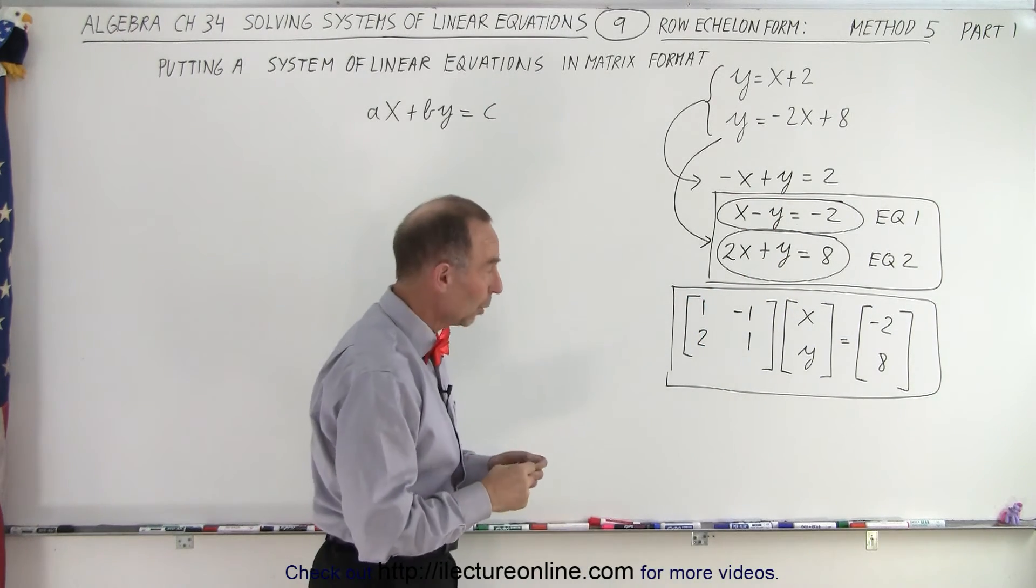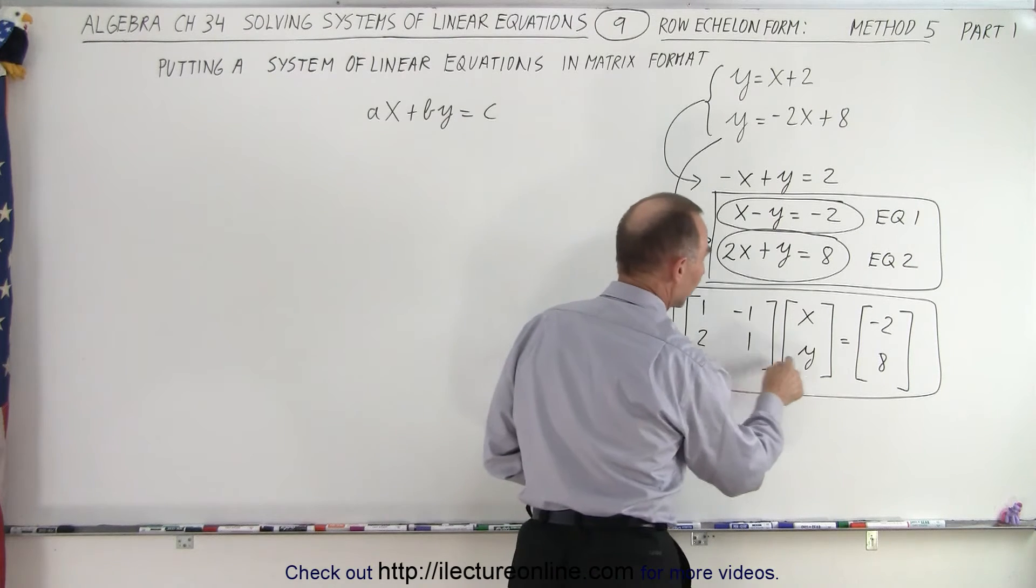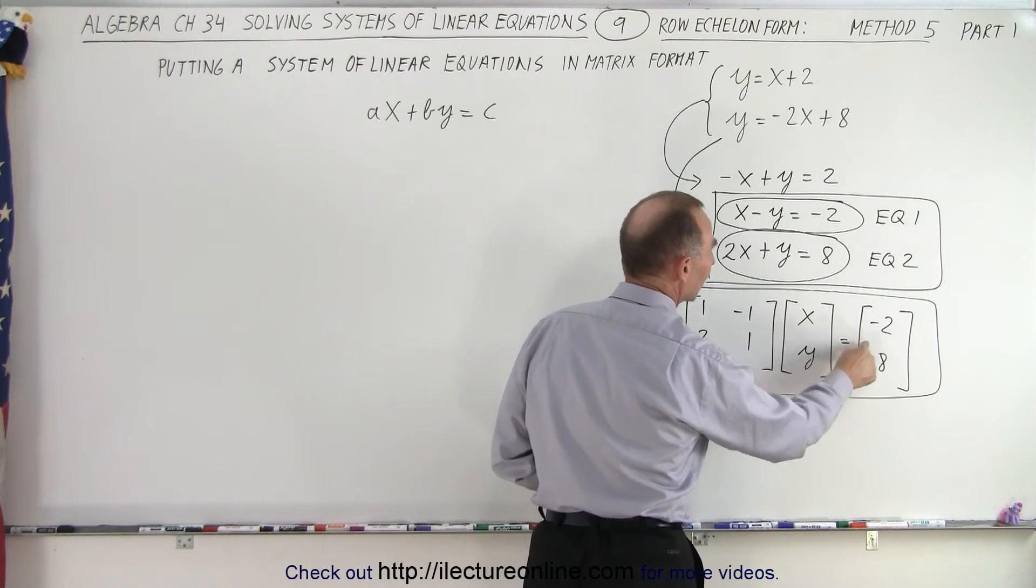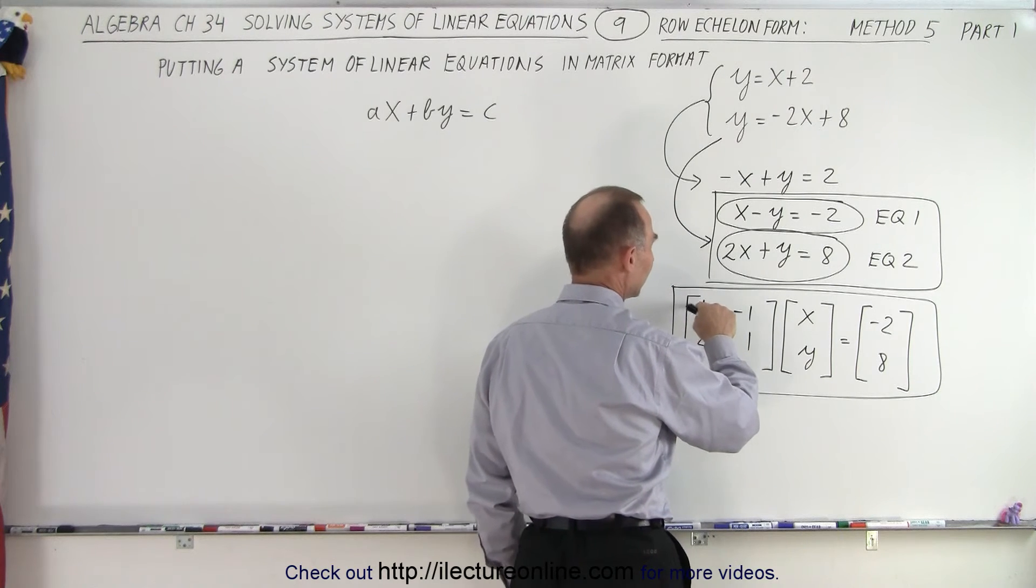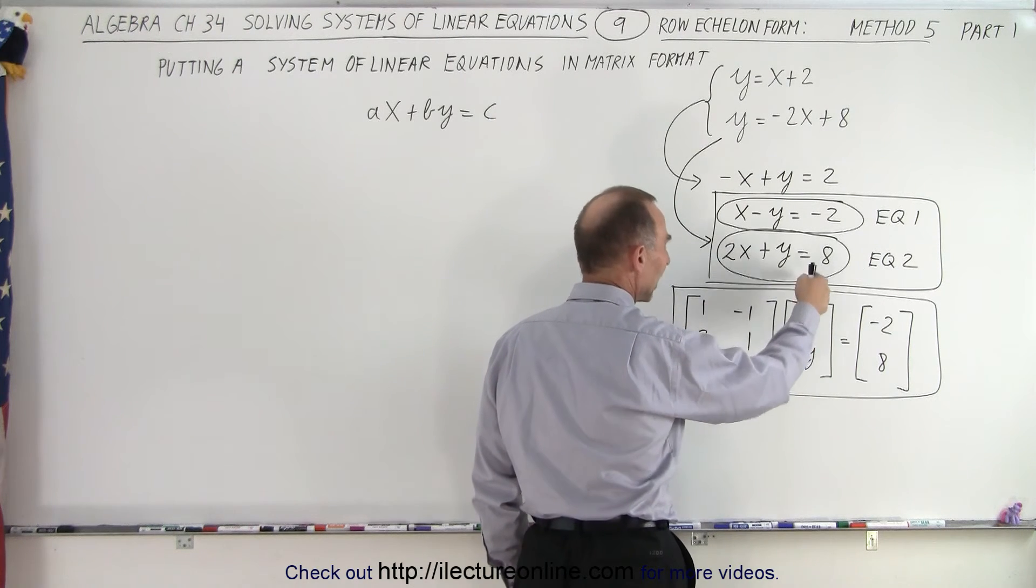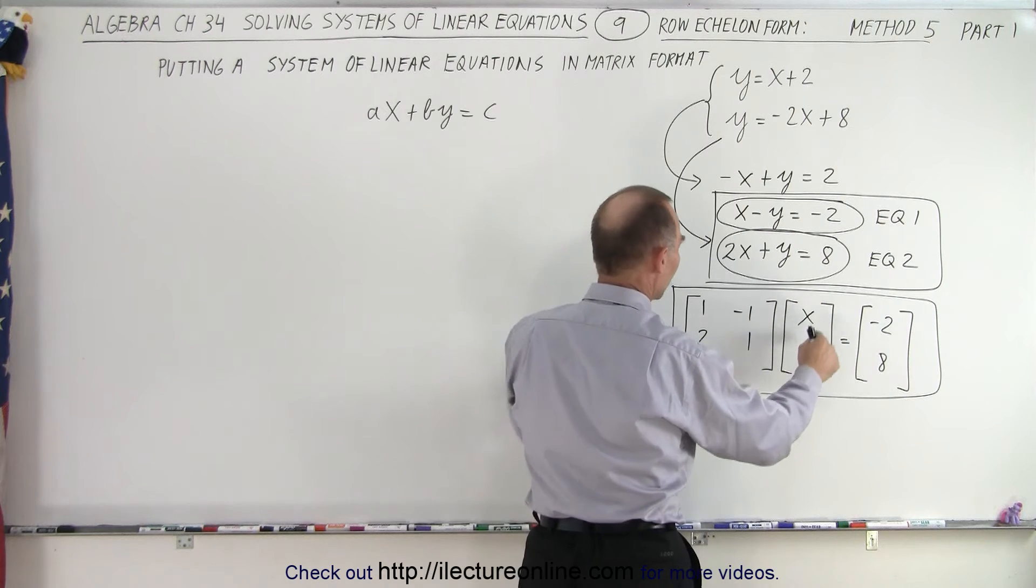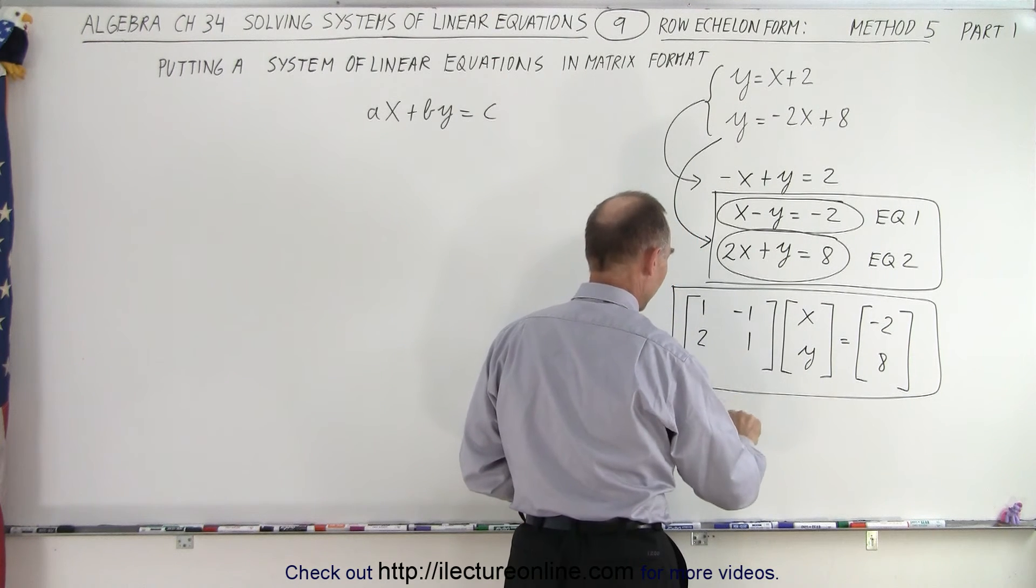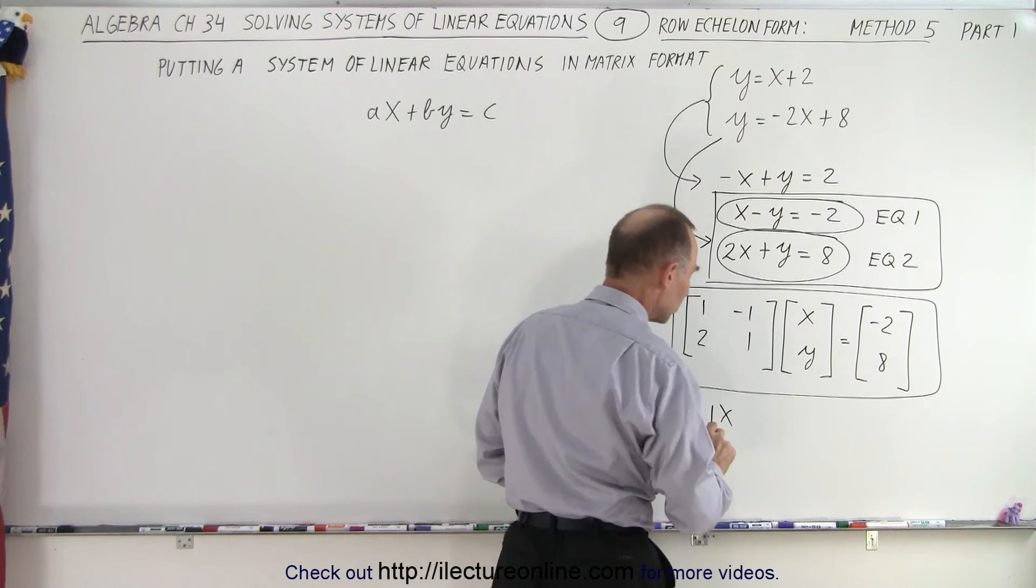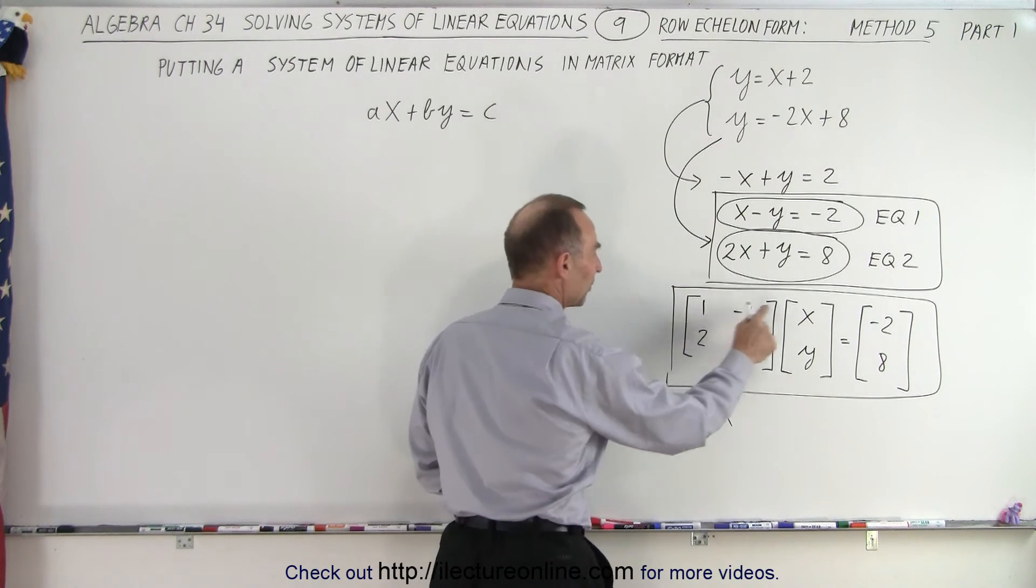This means we multiply these two matrices together to get this matrix. Notice we multiply the elements in this row times the elements in this column: 1 times x.